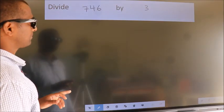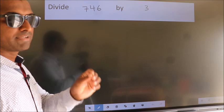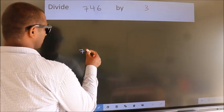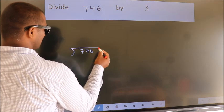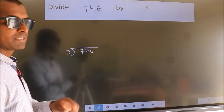Divide 746 by 3. To do this division we should frame it in this way. 746 here, 3 here. This is your step 1.